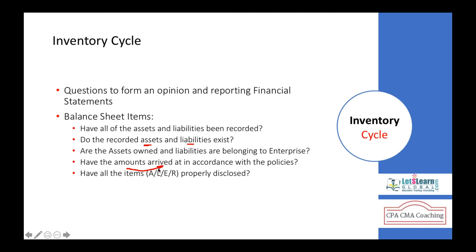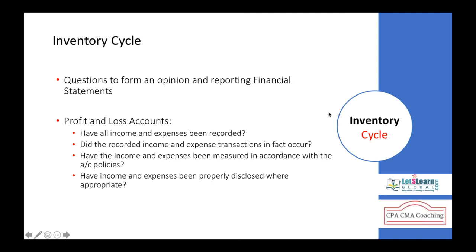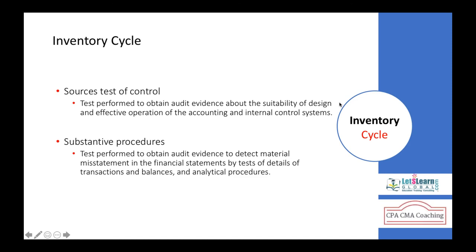Are the amounts and values arrived at in accordance with the policies? Are the items related to assets, liabilities, expenses, and revenues properly disclosed? For the income statement, the questions include: are all incomes and expenses recorded? Did the recorded incomes and expenses really occur? Are they measured according to the accounting policies? Are they disclosed as appropriate? These are the questions to be raised by the auditor before forming an opinion.